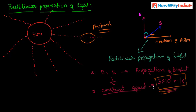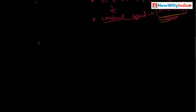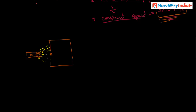This is called rectilinear propagation of light. Let us discuss some examples. Consider a hole in a box — when you focus a light source, like a torch light, it produces light energy in all directions. One ray passes through the hole, and you can observe that this ray moves in a straight line.